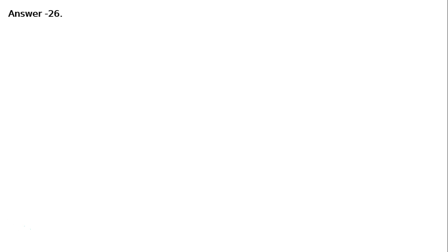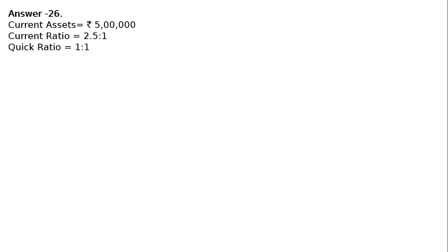First of all, we will write down the information — it will help us to understand in one go. Answer 26: Current assets = Rs. 5 lakhs. Current ratio = 2.5 is to 1. Quick ratio = 1 is to 1.